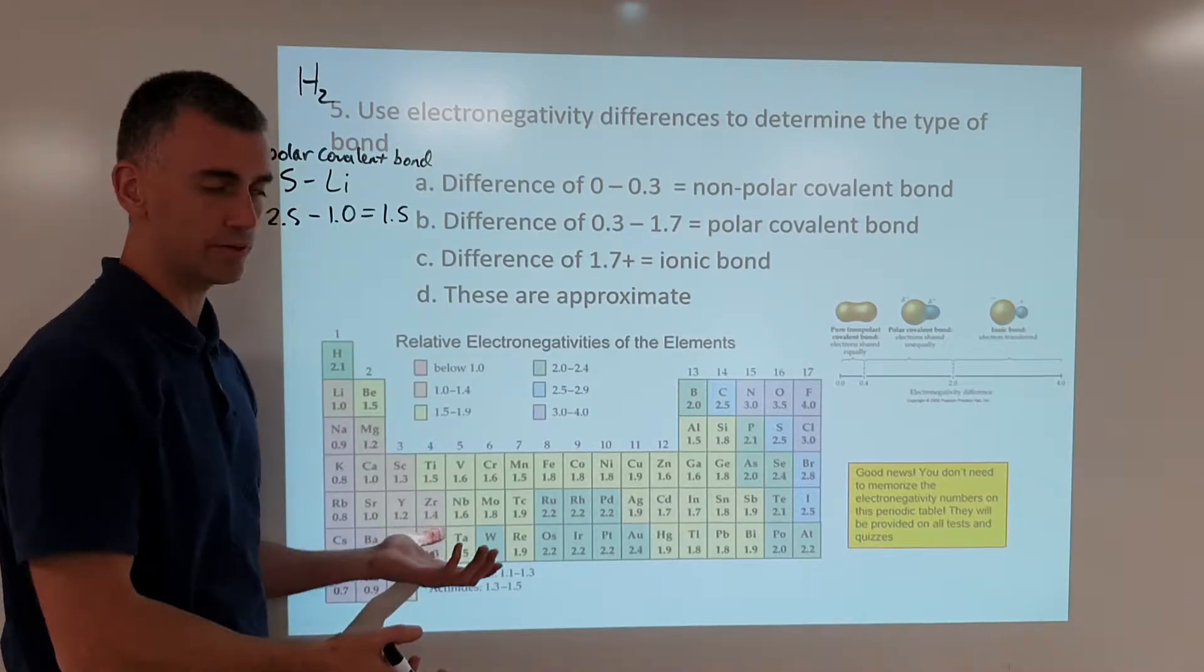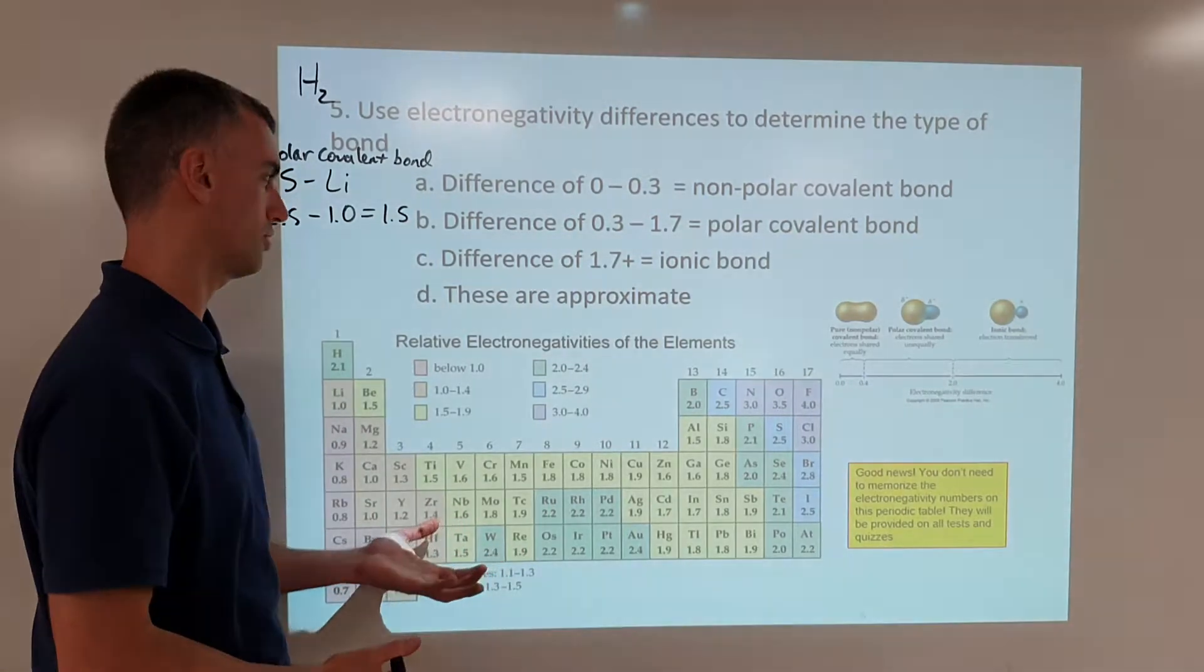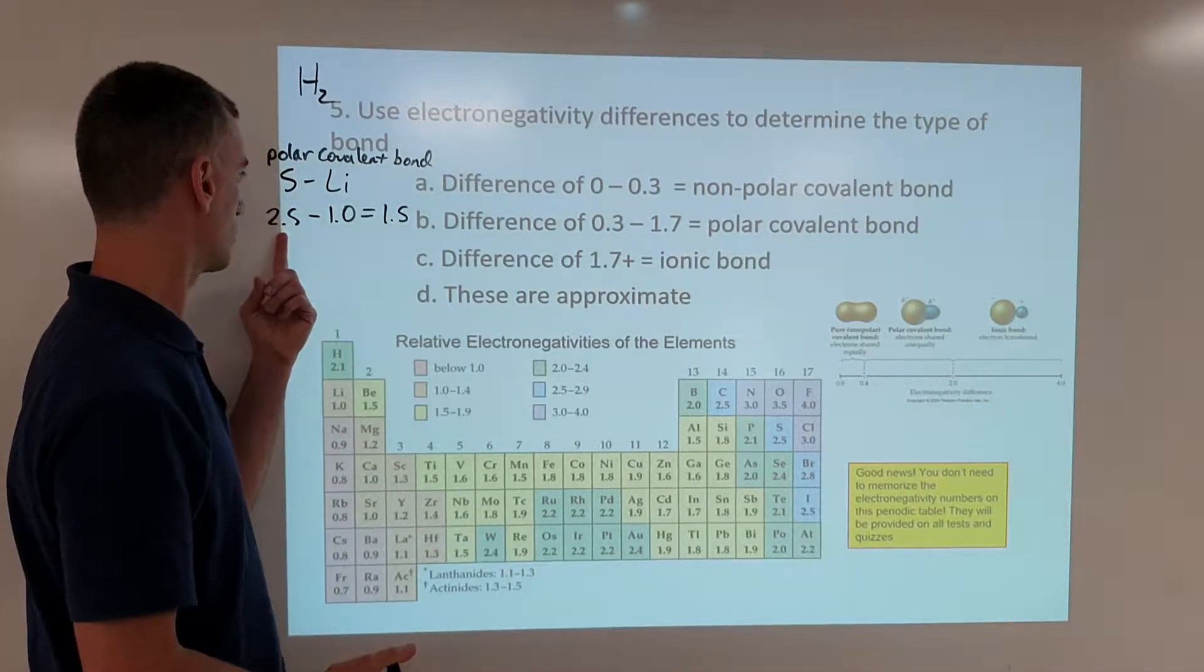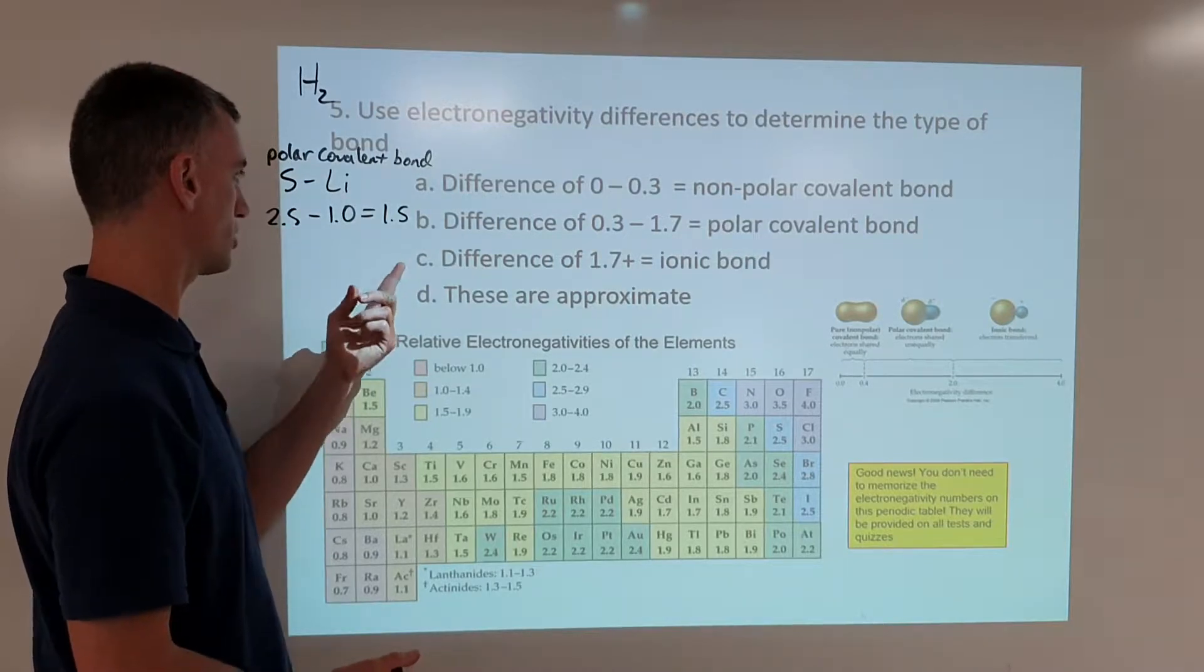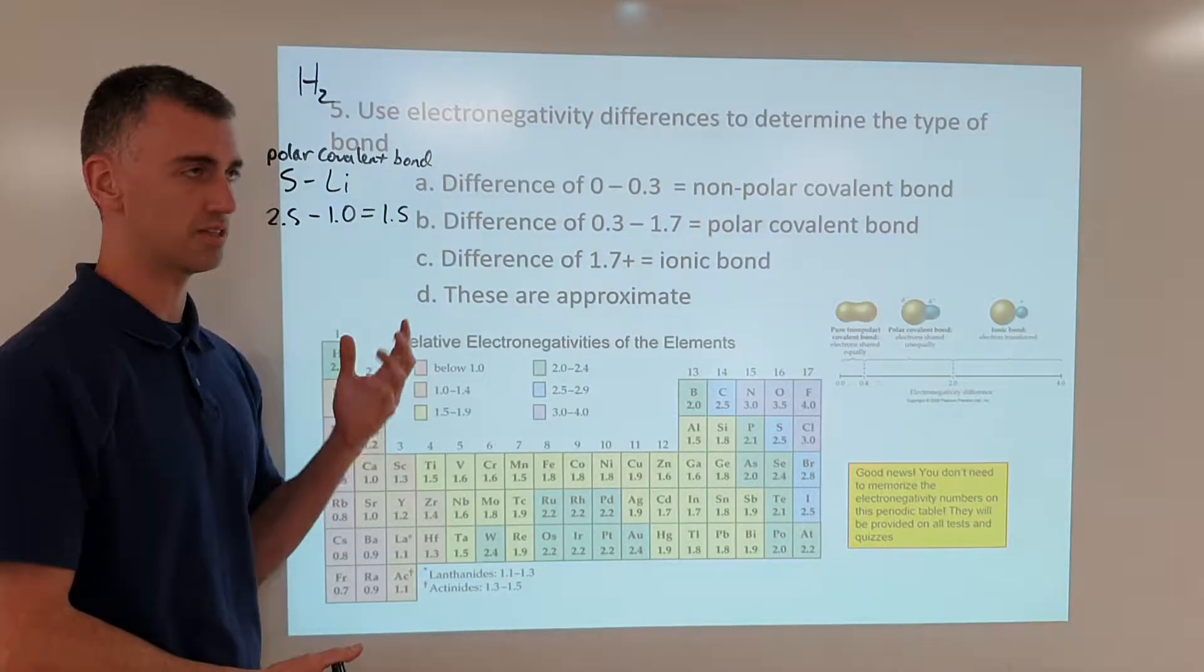Electronegativity is only the degree to which an element attracts electrons. So this one attracts electrons more than this one. So they'll be sharing electrons, but just unevenly. And that's essentially what this is telling us.